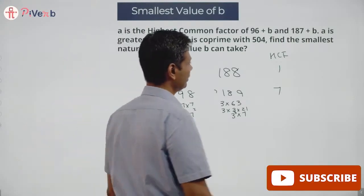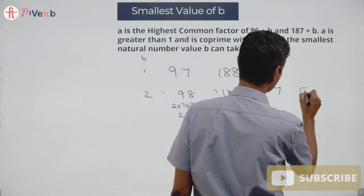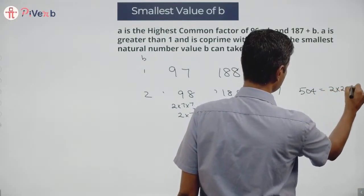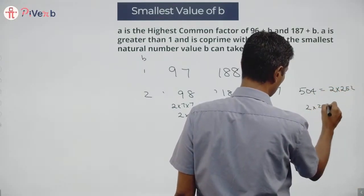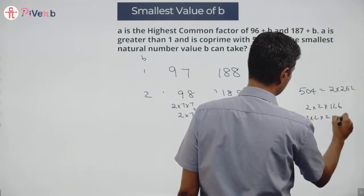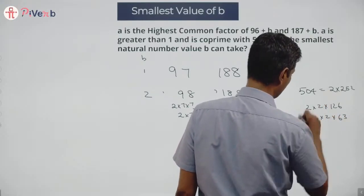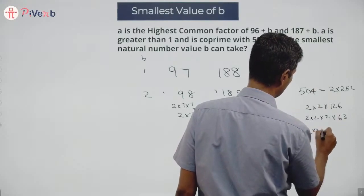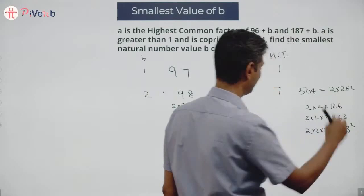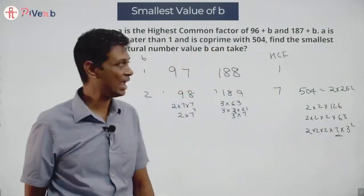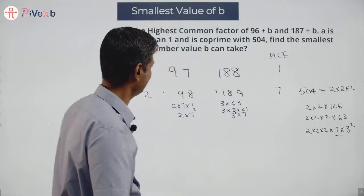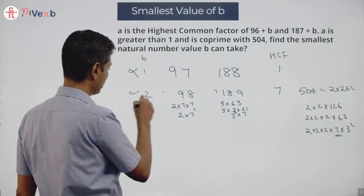Let me check. 504 factors as 2 times 252, then 2 times 2 times 126, then 2 times 2 times 2 times 63, and 63 is 7 times 9. So 504 equals 2 cubed times 7 times 3 squared. It has a 7 in it, so A cannot be 7. A is coprime with 504, so B equals 2 doesn't work.